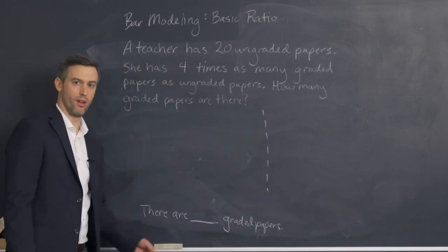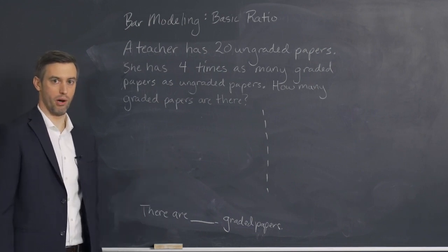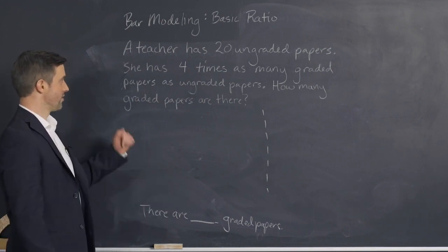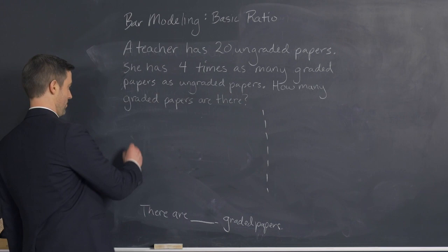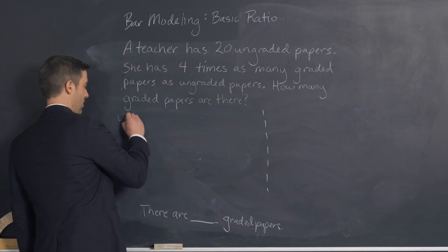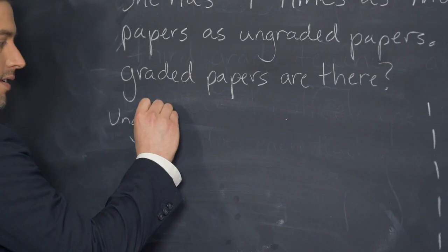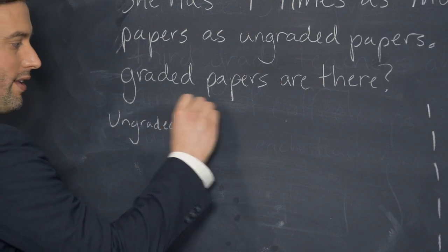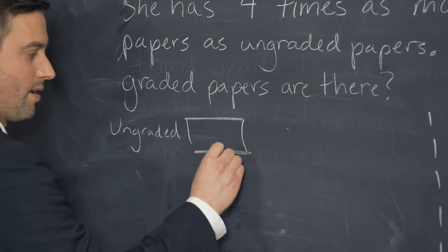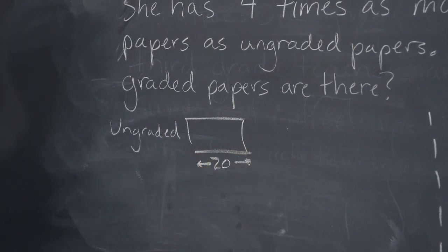Okay, now we're going to read back through and stop where we can draw a bar or something. A teacher has 20 ungraded papers. So we have ungraded. We know that that is represented by 20. A quantity of 20, a bar.